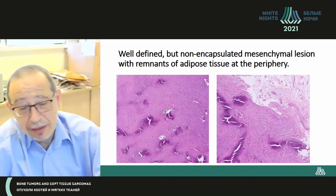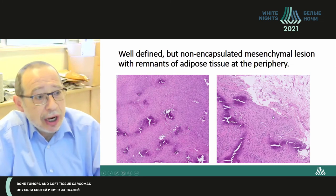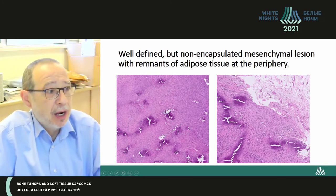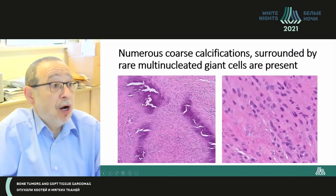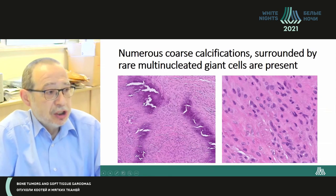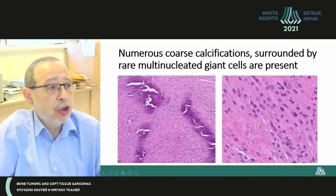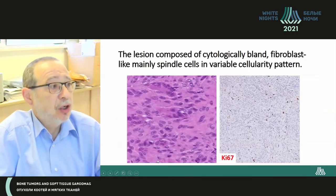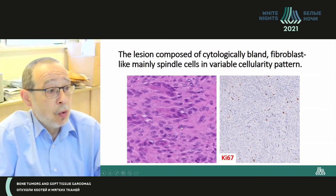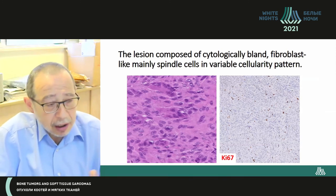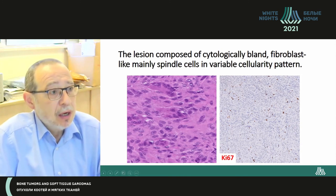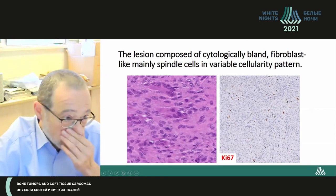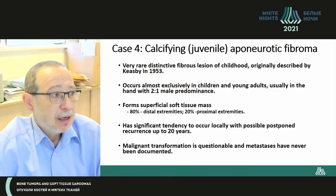On microscopy: a well-defined but non-encapsulated mesenchymal lesion with remnants of mature adipose tissue at its periphery. Very numerous, coarse, heavy calcifications surrounded by multinucleated giant cells. At larger magnification, the stroma is composed of fibroblast-like spindle cells. Ki67 is moderately positive. All other markers were naturally negative.